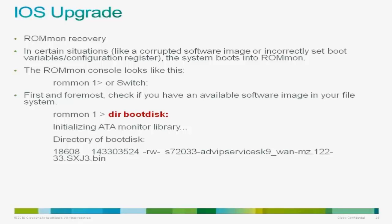Booting out of ROMMON — there are several ways available. First, check if you have an available image you can boot from directly. You need to identify your file systems. For example, if your file system is bootdisk, you can list it using DIR followed by the file system name, such as DIR bootdisk. This lists everything available. As an example, I listed the bootdisk file system and can see the SXJ3 image is available. If you see an available image, always try to boot using that image.